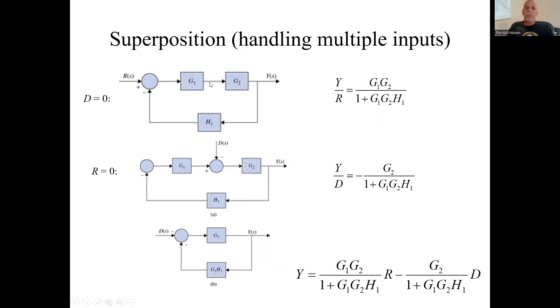G1 times G2 plays the role of G. This H1 plays the role of H. You have a G over 1 plus GH. That transfer function is G1G2 over 1 plus G1G2H.